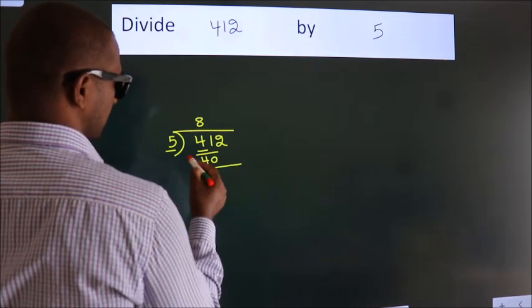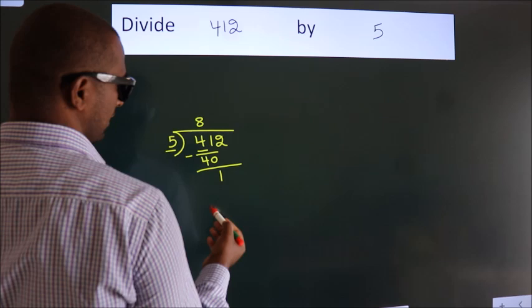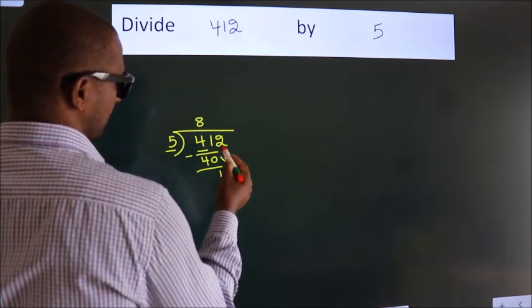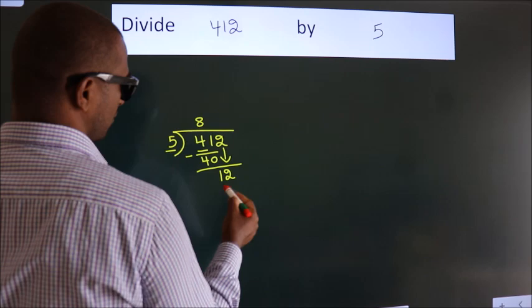Now we should subtract. We get 1. After this, bring down the beside number. So, 2 down, giving us 12.